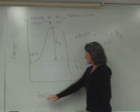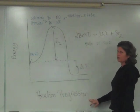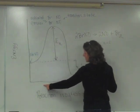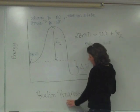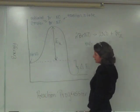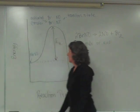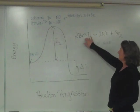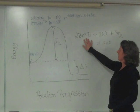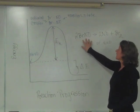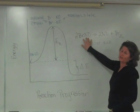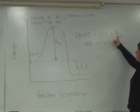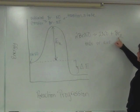What we have for an x-axis is the reaction progression, so this is an energy profile. This shows reactants going to products, so the progression of the reaction, and the y-axis is energy. Our example here is this reaction of two bromine nitrogen oxide going to two nitrogen monoxides plus bromine gas.